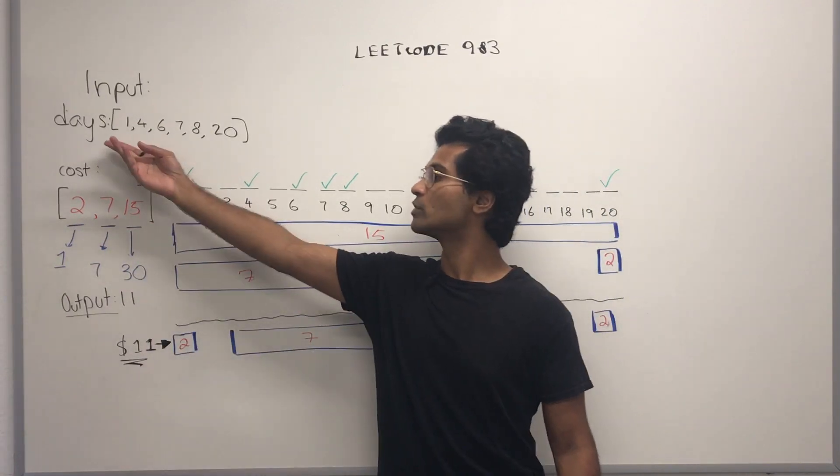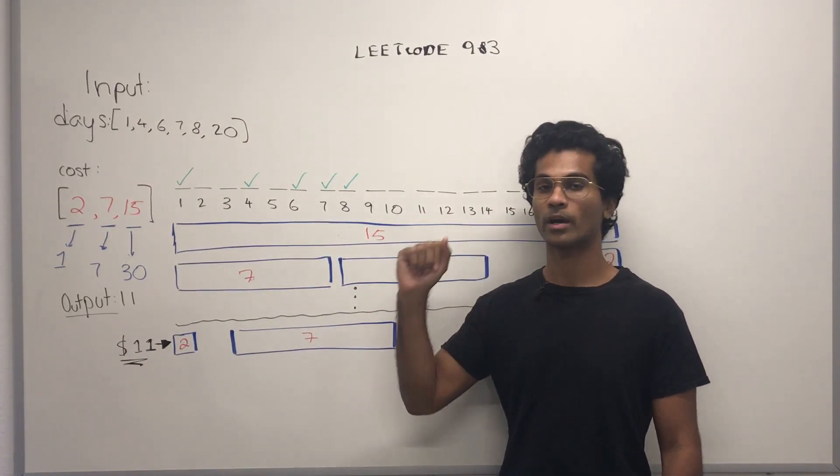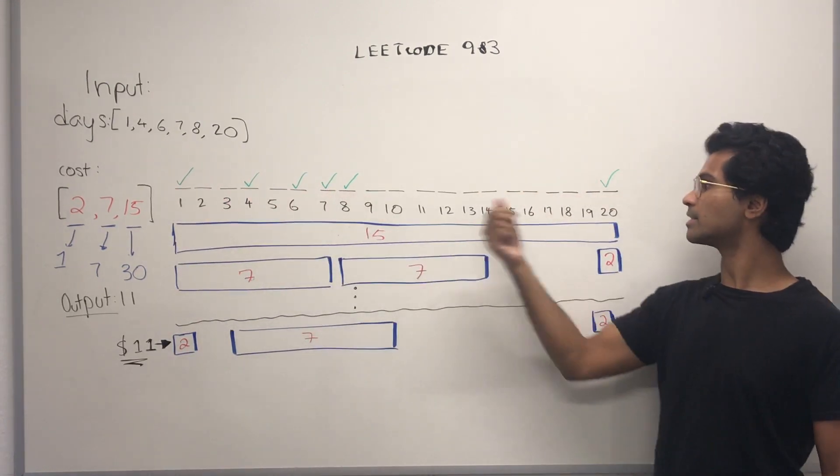Let's say these are the specific days we want to travel. I've written it out, and I've put a green check mark on the days that we do want to travel. So, 1, 4, 6, 7, 8, and 20.